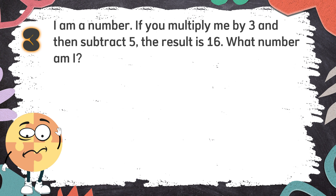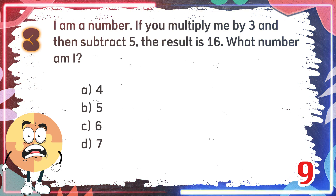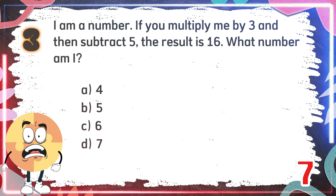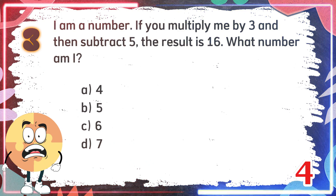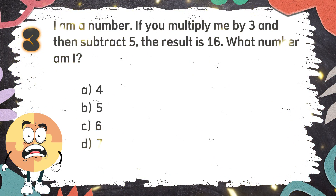Number 3: I am a number. If you multiply me by 3 and then subtract 5, the result is 16. What number am I? The choices are: A. 4, B. 5, C. 6, D. 7. The correct answer is D. 7.